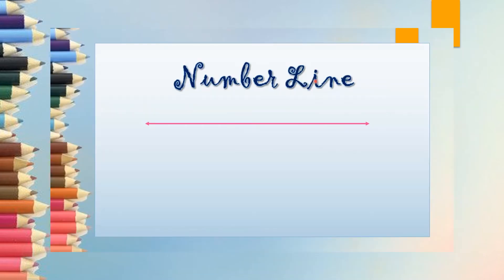A number line is just like a line but with numbers on it. Whenever we have to draw a number line, first of all we have to draw a line with two arrows on both the sides. It is very important to draw arrows on both the sides. Another thing to note is that a number line should always be drawn with a pencil.